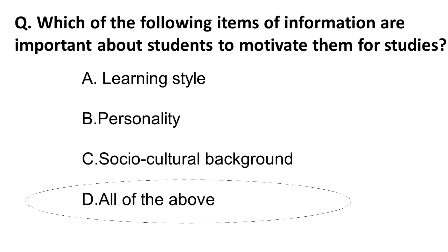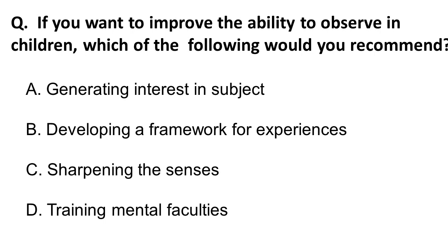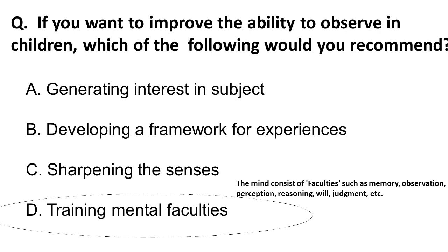The next question is: if you want to improve the ability to observe in students, which would you recommend? Options include generating interest in the subject, developing a framework for experience, sharpening the senses, and training mental faculties. The correct answer is training mental faculties. Mental faculties include memory, observation, perception, reasoning, will, and judgment — training all of these will increase the ability to observe.